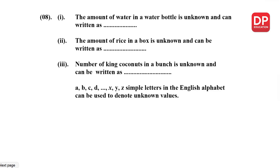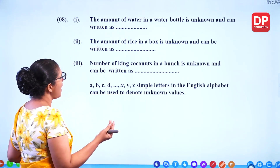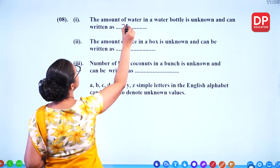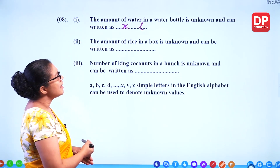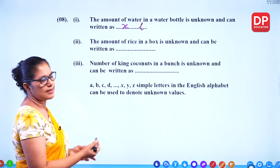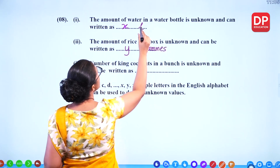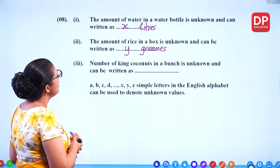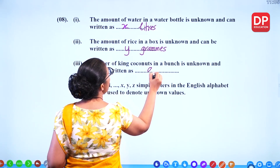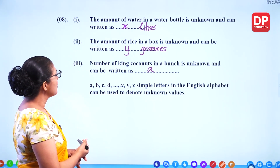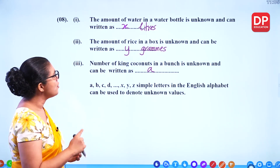The amount of water in a water bottle is unknown and can be written as X litres. The amount of rice in a box is unknown and can be written as Y grams. The number of king coconuts in a bunch is unknown and can be written as A number of king coconuts. So we can use any simple letter in the English alphabet to represent unknown values.